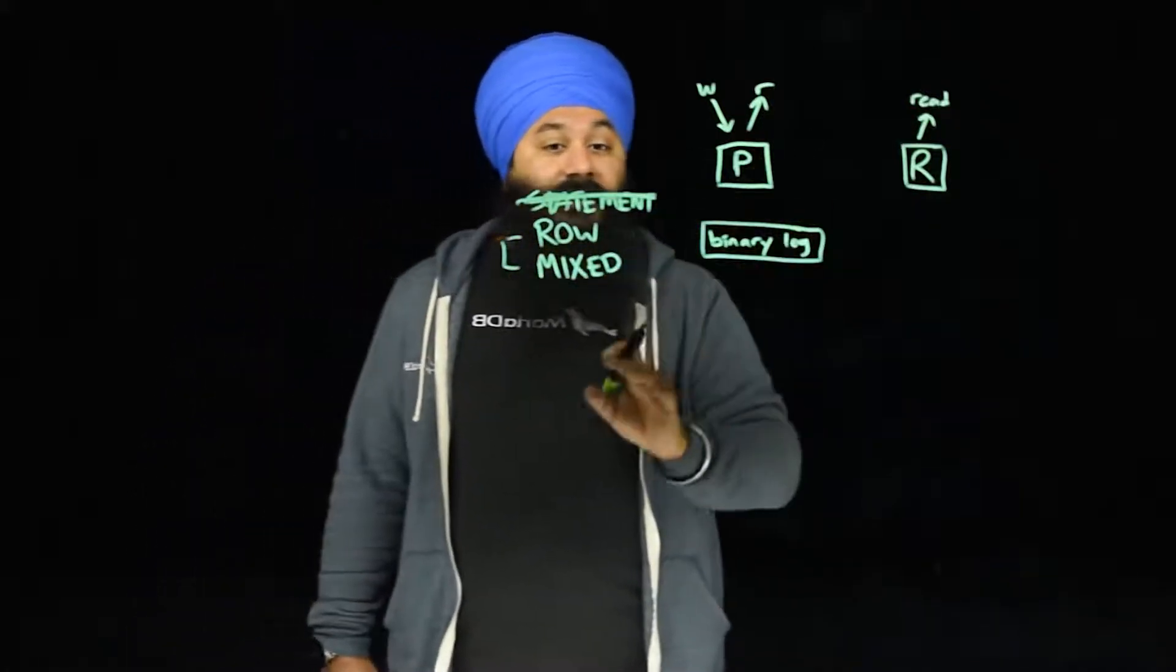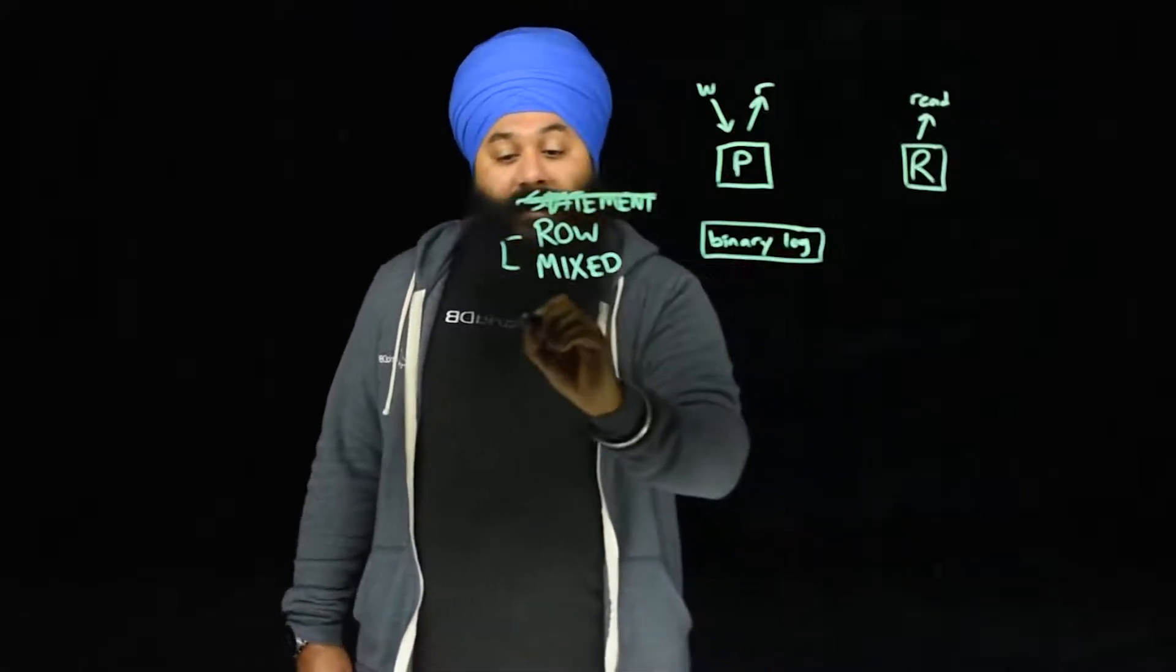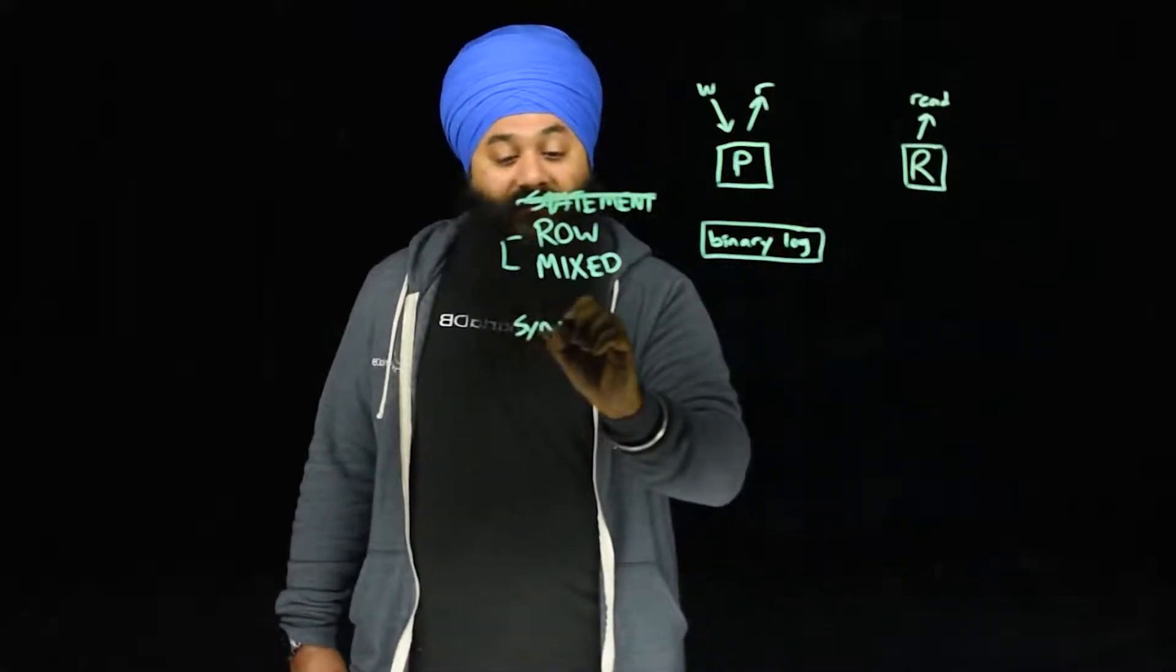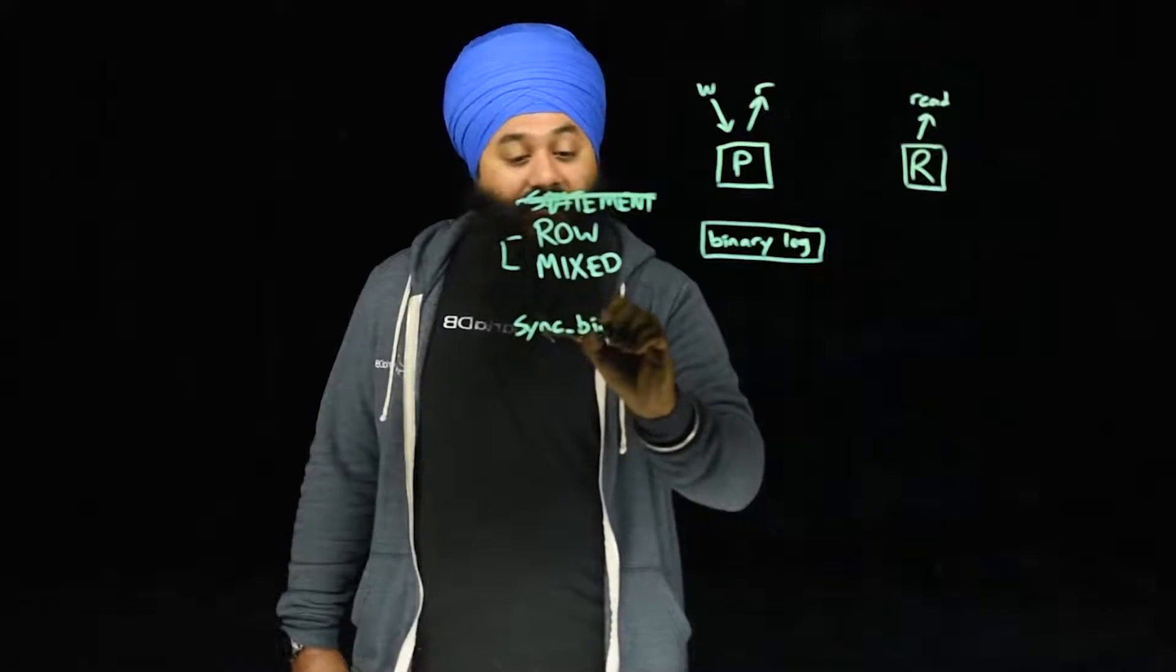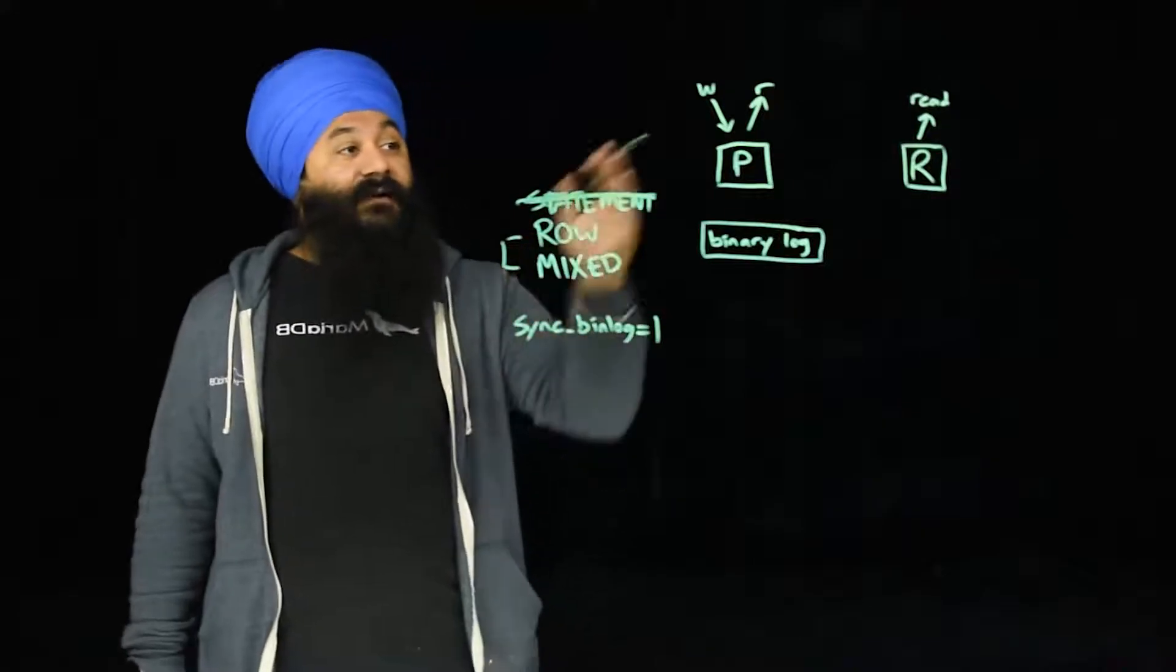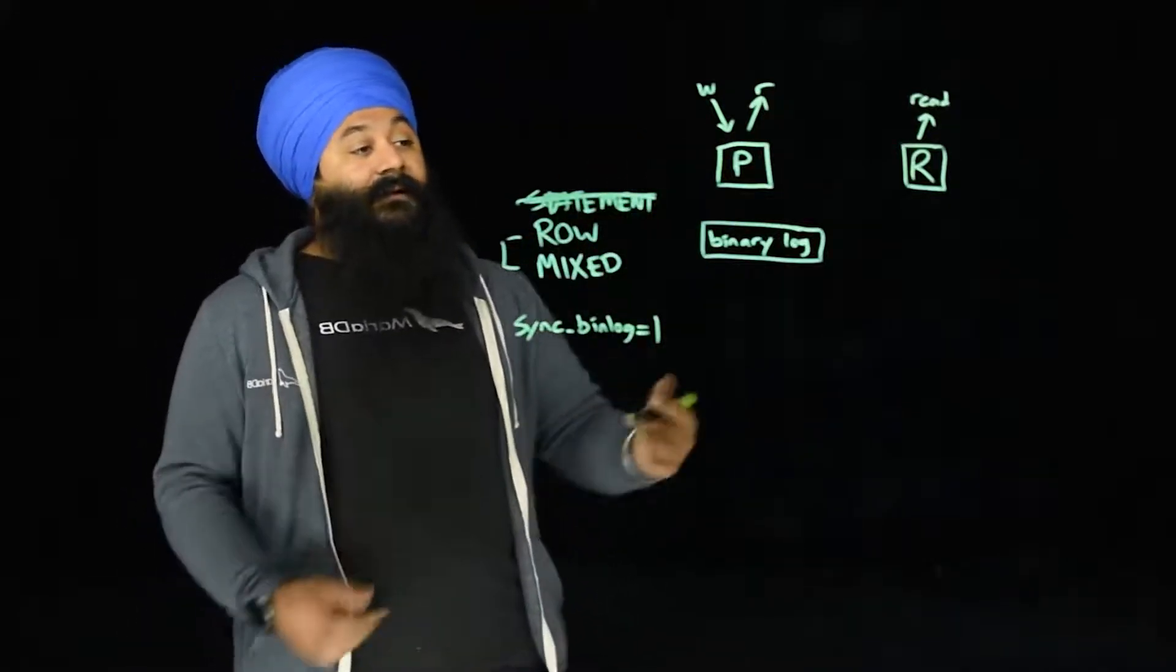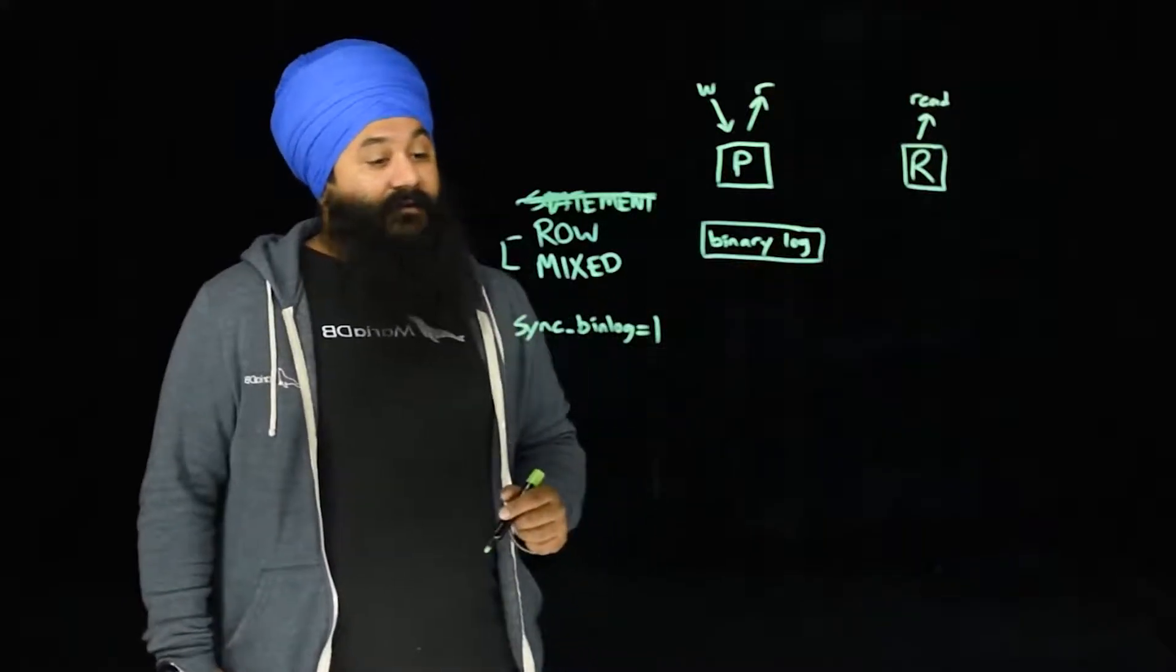So this data gets written basically as applied on the primary to the binary log. And this happens based on an interval set by sync bin log. Sync bin log equals one means that when any transaction is written and committed on the primary, it is immediately written and committed to the binary log.